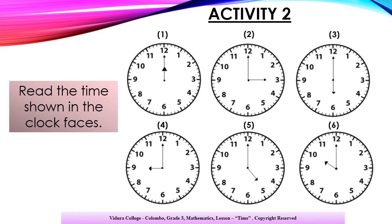Let's do an activity. Read the time shown on the clock faces. The first clock face shows the time as 12 o'clock. The second clock face shows 3 o'clock. The third clock face shows 6 o'clock. The fourth clock face shows 9 o'clock. The fifth clock face shows 5 o'clock. And finally, the last clock face shows 10 o'clock.